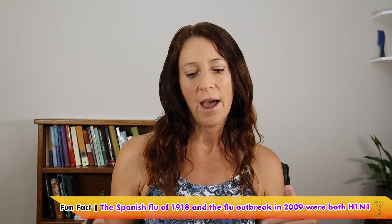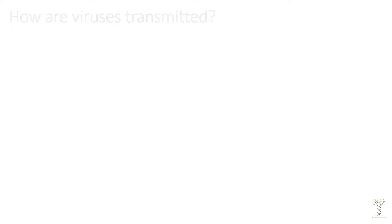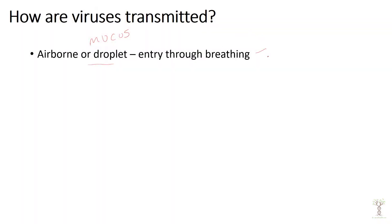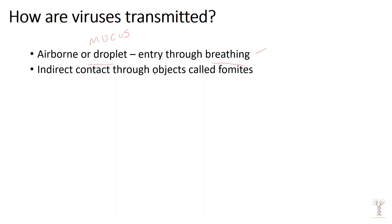Different influenza viruses have different hemagglutinin and neuraminidase molecules. There are multiple ways a virus can be transmitted from one organism to another. One way is through airborne transmission or droplets — mucus or saliva that enter the body through breathing. We can also transmit things through objects. If you have a cold and cough into your hand then touch a doorknob, virus particles can transfer to the doorknob and stay there for a period of time — anywhere from a few hours to maybe three to five days. If someone else touches the doorknob and then touches their face, they can inhale those virus particles.